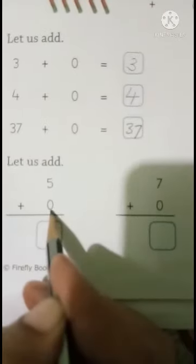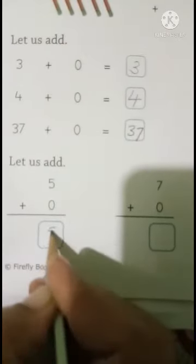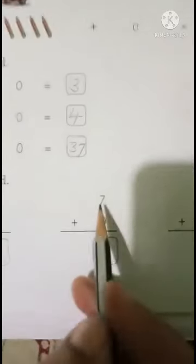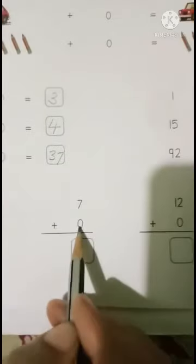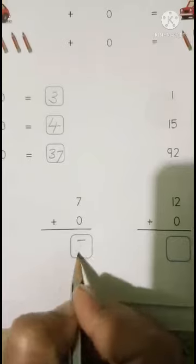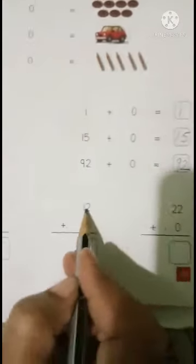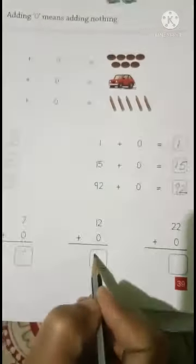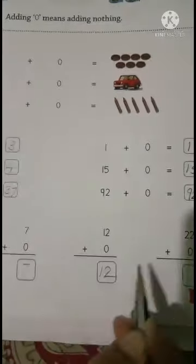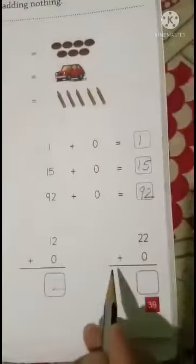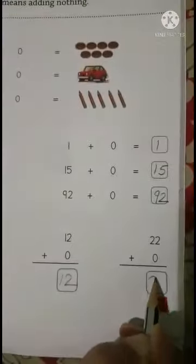Correct children. Let us add, 5 plus 0 is 5. 7 plus 0 is 7. 12 plus 0 is 12. 22 plus 0 equals 22.